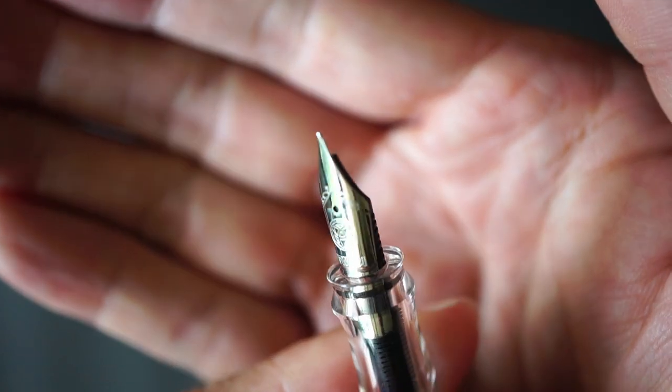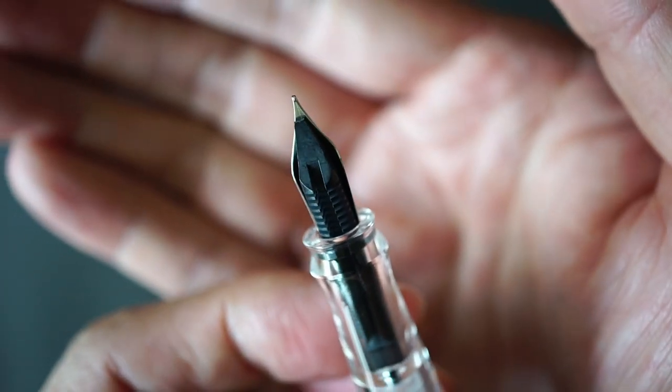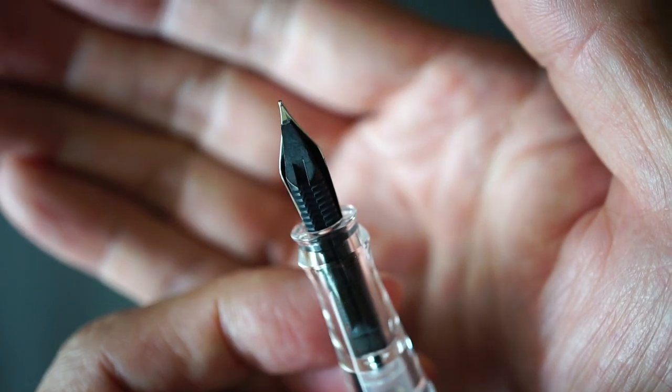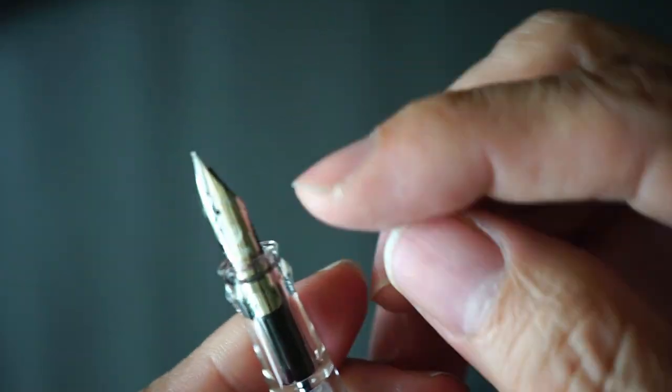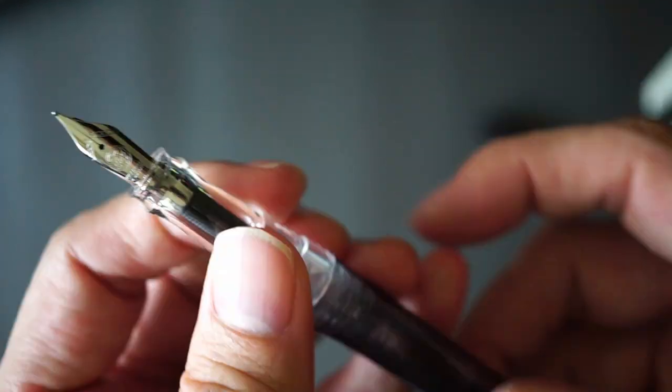Lastly, you get the nib. I'll compare this later on with the other TWSBIs I have, but it does look like a pretty small nib unit. It looks like a number four or something like that.